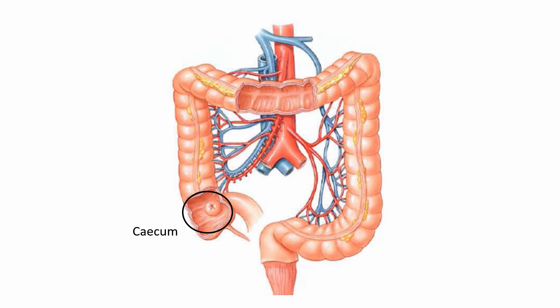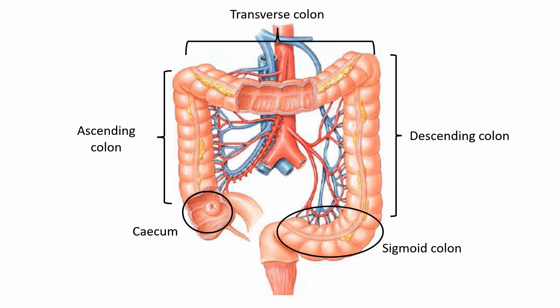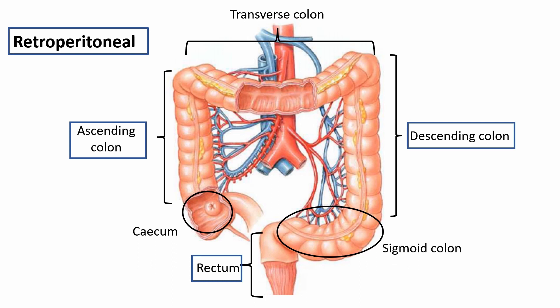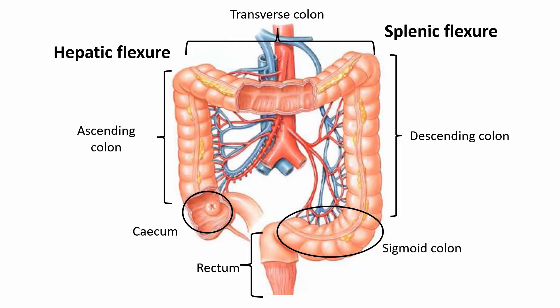The colon itself is composed of the ascending, transverse, descending, and sigmoid colon. The ascending and descending parts are retroperitoneal, whereas the rest of the colon and cecum are intraperitoneal. The ascending colon has an anterior surface covered by peritoneum and is attached to the posterior abdominal wall. Superiorly, we have the hepatic flexure, where the ascending colon turns into the transverse colon. The transverse colon is intraperitoneal, and we have a transverse mesocolon which connects the colon to the posterior wall of the abdomen.